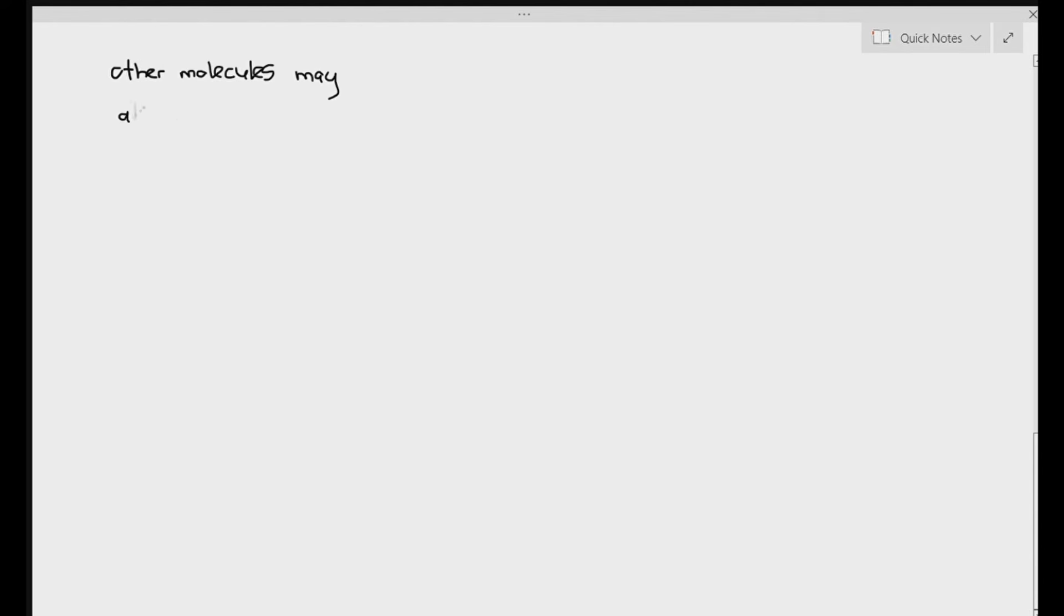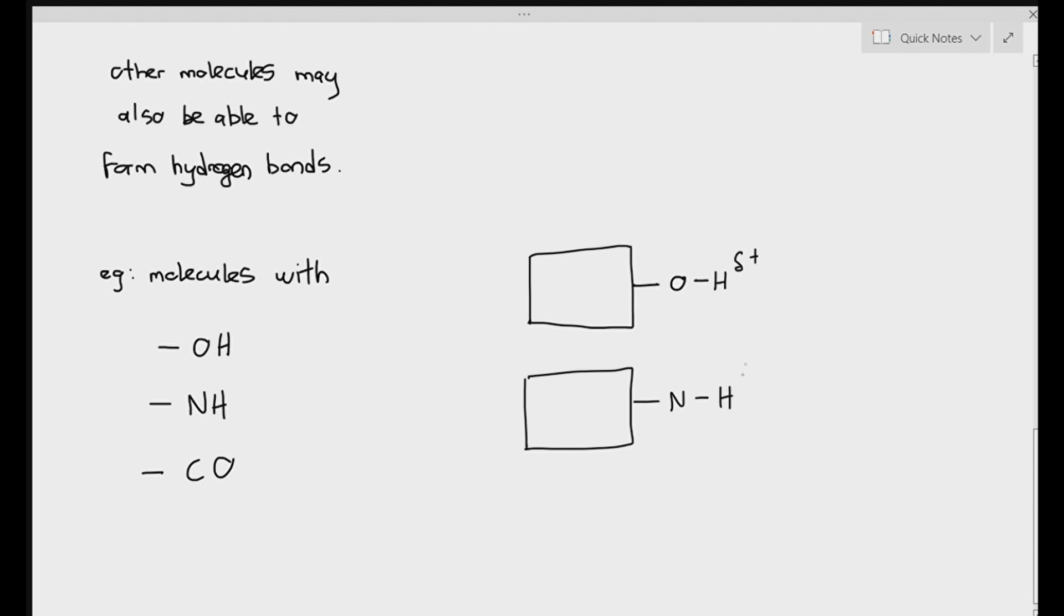Other molecules may also form hydrogen bonds. Molecules with OH groups, molecules with NH groups, and also molecules with CO groups. A molecule with an OH group - the hydrogen end will have a partially positive charge. NH group will have the hydrogen with a partially positive charge as well. But the C double bond O, the oxygen atom has a partially negative charge. This is important to know because when we cover amino acids and lipids later, this is important.